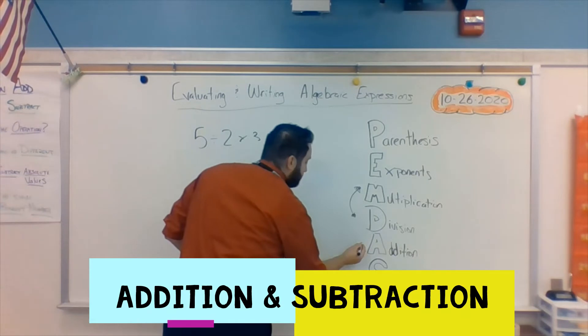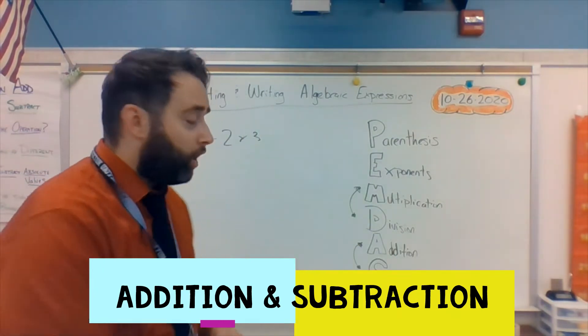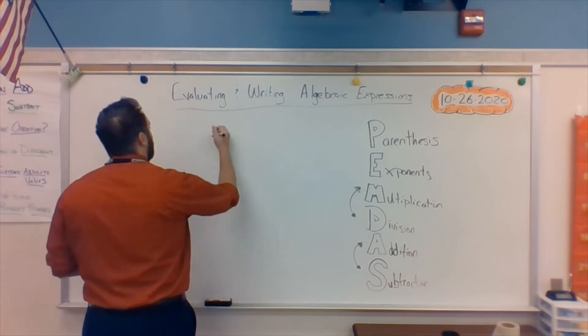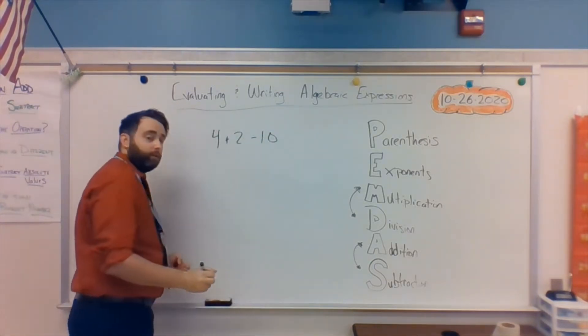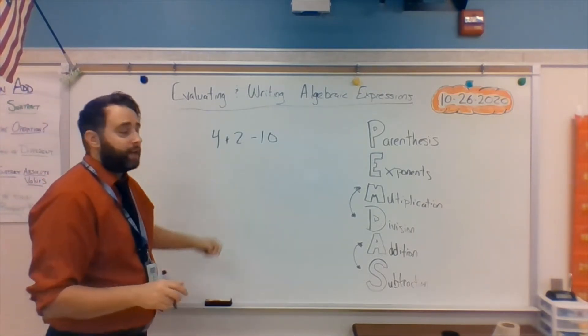And then, same thing down here for your PEMDAS, for the AS part. Those can be swapped. Those two depend on which one is first, going left or right. So, 4 plus 2, minus 10. 4 plus 2 is what you do first, because it's on the left. Minus 10. So, 4 plus 2 is 6, minus 10, that would give us a negative 4.